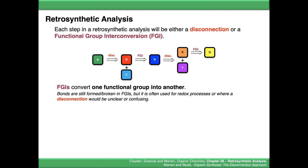A functional group interconversion, as the name suggests, converts a functional group into another. This is not to say that bonds aren't formed or broken in FGIs, but we often use FGIs for redox processes, or where a disconnection would be unclear or confusing.